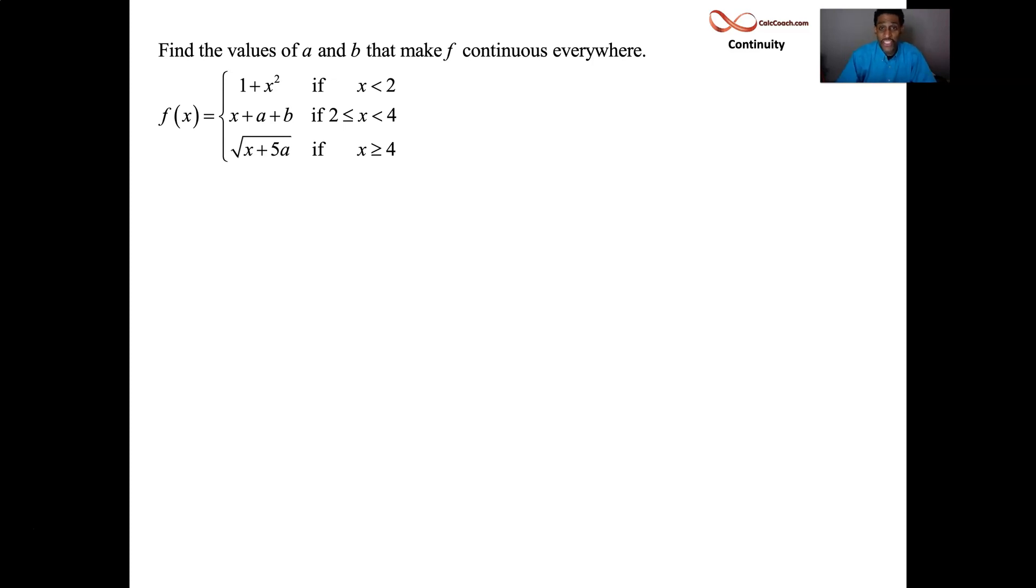The function is three different functions depending on which x values you have. The function is a piecewise function. So what I like to do with piecewise functions is write it in number line format. So it's broken at two and at four. So we break up the number line at two and four. Anything smaller than two, you're the parabola, one plus x squared. Anything between two and four, including two officially, you're the line, x plus a plus b. Anything that's bigger than four, you're the root function, root of x plus 5a.